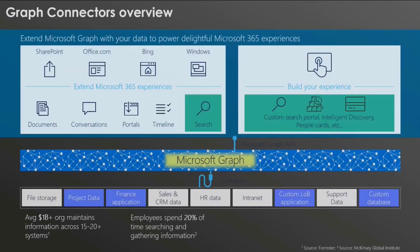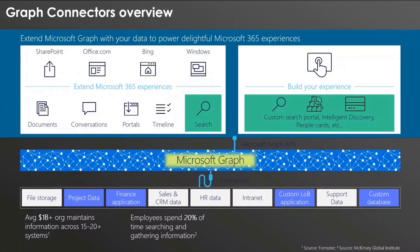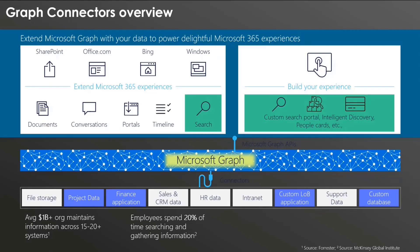Graph Connectors let you connect all your third-party external data sources and bring the data into Microsoft Graph to power intelligent Microsoft 365 experiences. You may have data sources like file storage, project data, finance applications, and we have out-of-the-box connectors for these — a file share connector, a Salesforce connector, an Intranet connector, a ServiceNow connector. These come out of the box from Microsoft.